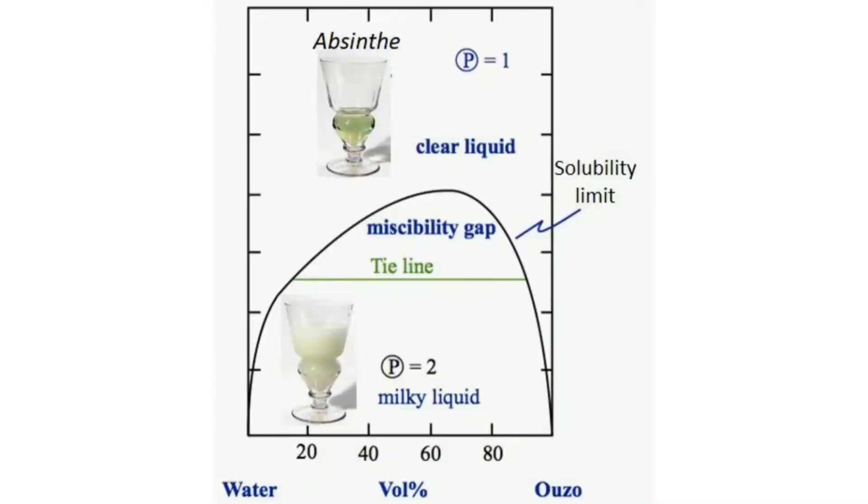If you look at the phase diagram, you can see that if you have water with a little bit of Ouzo, they completely mix and vice versa. Only at intermediate values will the oil and water unmix. The miscibility gap is demonstrated here.